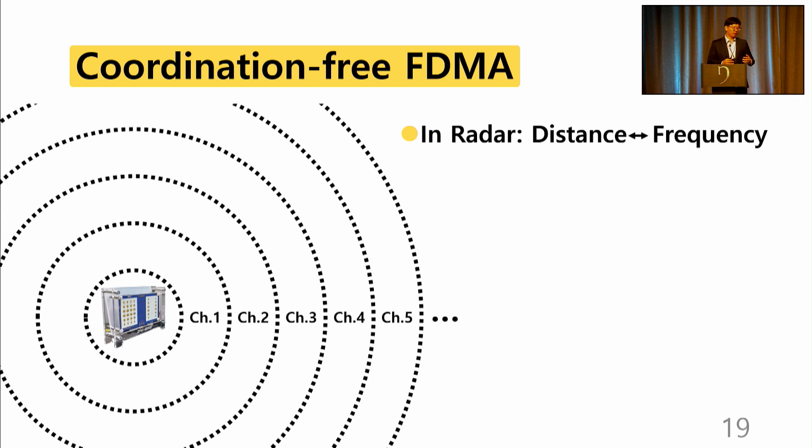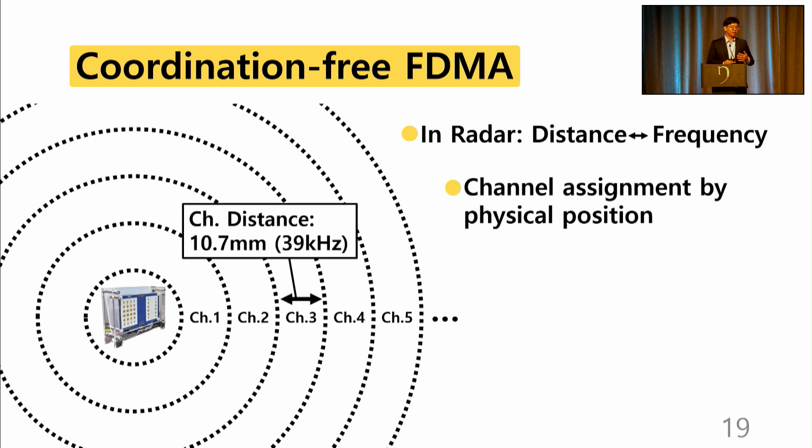Coordination-free FDMA utilizes the radar property that frequency increases linear to distance at radar. Thus, channel is assigned by the physical location of the tags. At typical 60 GHz Omniscatter, 39 kHz is shifted at every 10.7 mm. This means the channel changes at every 10.7 mm with 39 kHz bandwidth. Ultimately, this means backscatter tags with low power oscillators can utilize the large millimeter wave bandwidth.